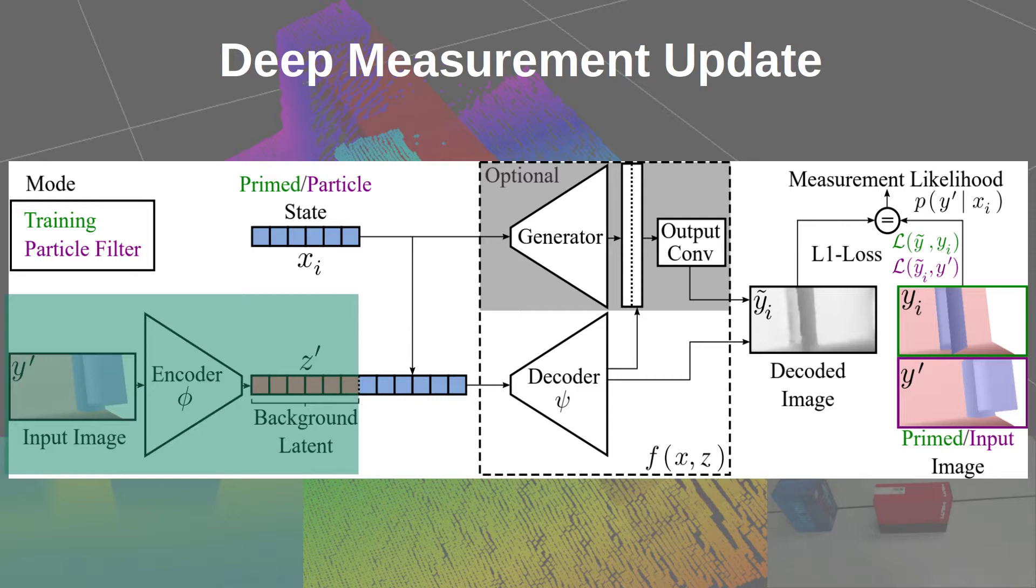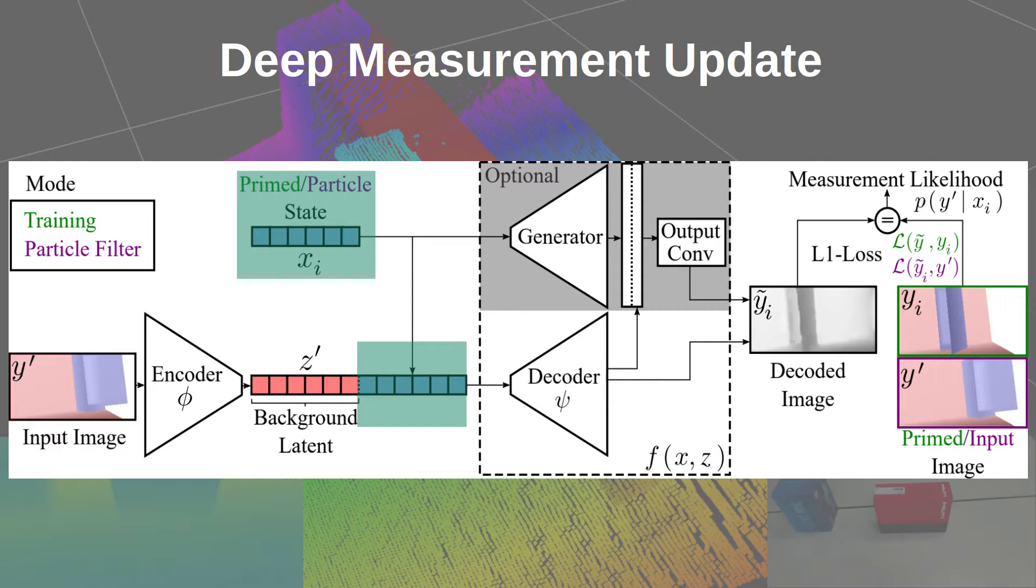The encoder network compresses the input image into a latent vector. The latent vector is augmented with a condition vector, in particular the particle state of a base filter. The augmented latent is then decompressed by the decoder and fed to the output module.